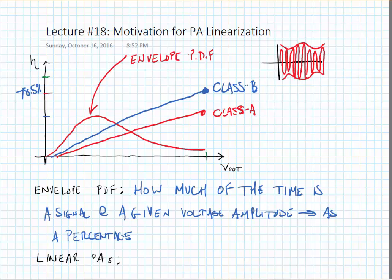Class A amplifiers have an efficiency that is proportional to the square of the output voltage, and it peaks at 50%.